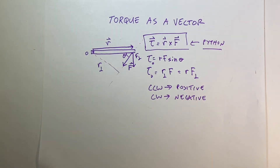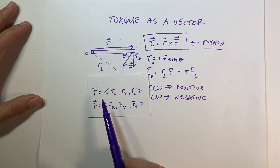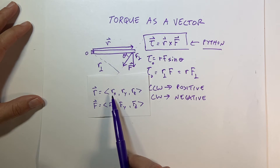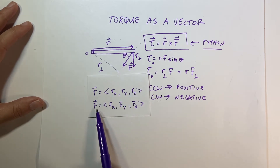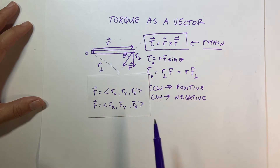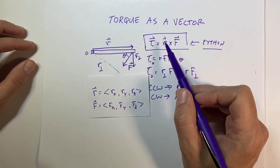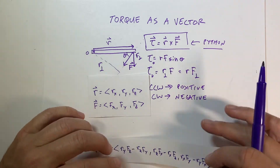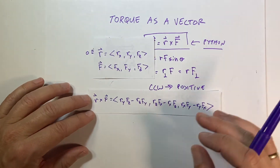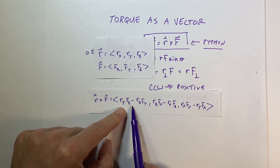Suppose I have two vectors: the r vector with three components rx, ry, and rz, and the force vector with components fx, fy, fz. If I do that, the cross product is defined by the following relationship — I know it's long, that's why I wrote it down.